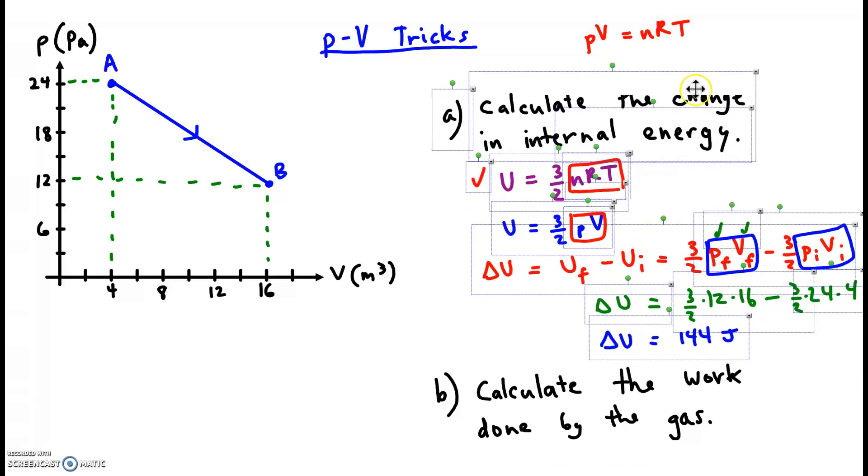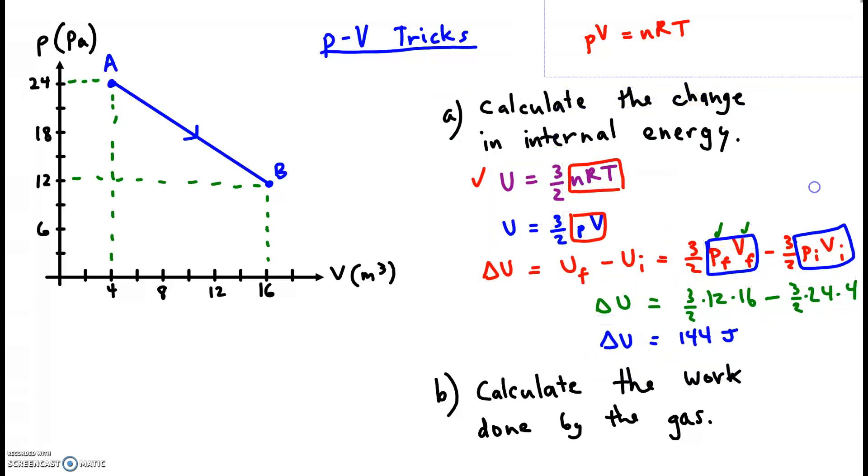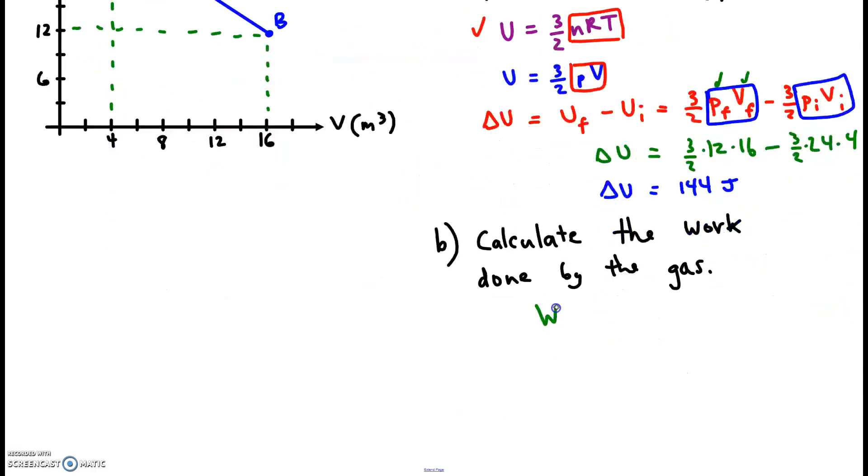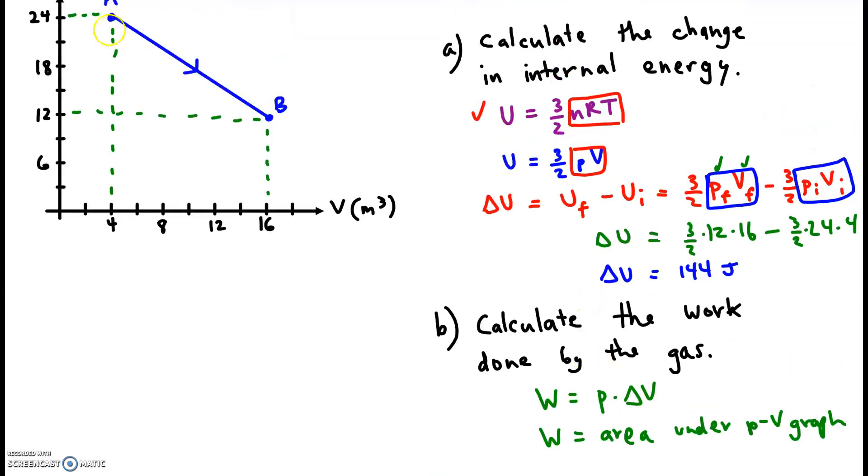Calculate the work done by the gas. Well, there are two ways to find work. Either we can do the fixed pressure times the change in volume or the area under the PV graph. We can't use this equation because the pressure is not fixed. The pressure is decreasing from 24 to 12. So we can't use this. We'll have to get the area under the graph.